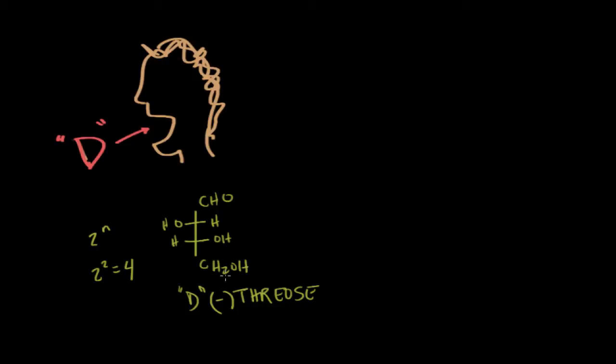Now, the second big thing that I want to clarify is that it's important to note that the D and L configurations of a particular carbohydrate are enantiomers, which mean they differ at every chiral carbon, not just the last one.